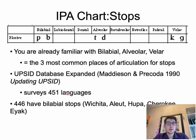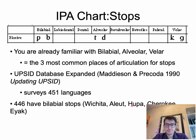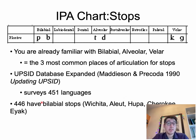Out of 451 languages surveyed, 446 have bilabial stops — only five do not. These are languages such as Wichita, a Caddoan language spoken in Oklahoma; Aleut, an Eskimo-Aleut language spoken in the Aleutian Islands in Alaska; Hupa; a Basque language spoken in California; and Cherokee and Eyak, also spoken in the USA. These are all indigenous languages — quite unusual for languages to lack bilabial stops.